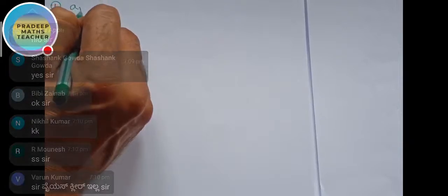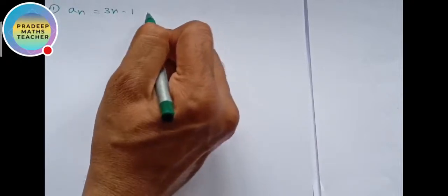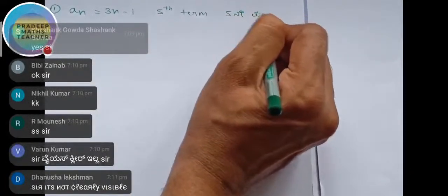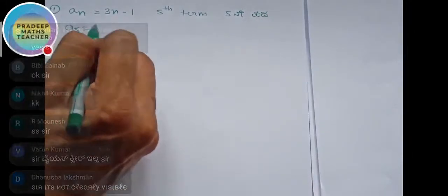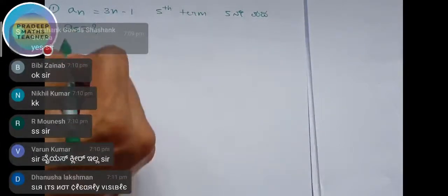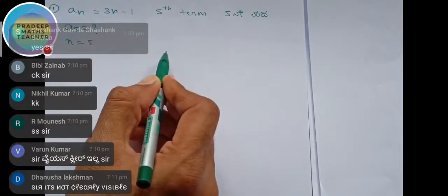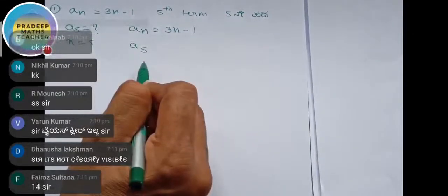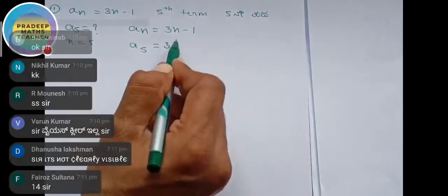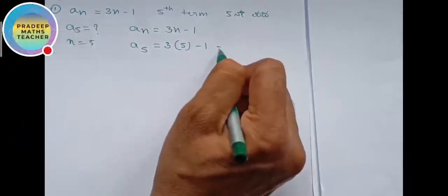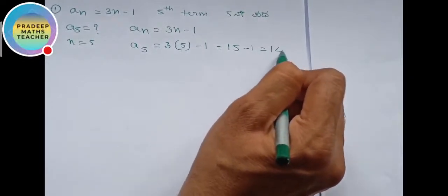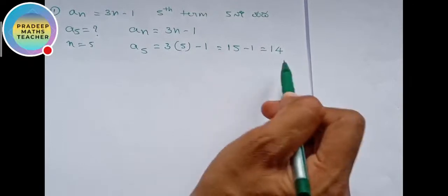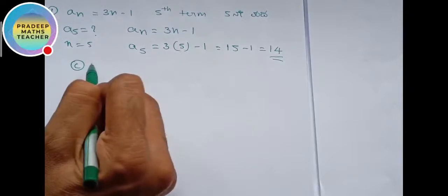AN equals 3N minus 1. This is the condition. For example, take a question: if AN equals 3N minus 1, and N value is 5, then A5 equals 3 into 5 minus 1. So 3 times 5 is 15, minus 1 equals 14. So the 5th term equals 14. Check the option correctly.